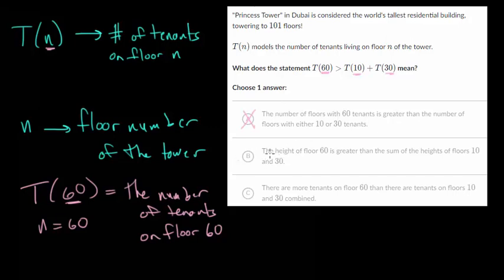Now B talks about the height of floor 60. But this problem and these letters don't represent the height. So we can immediately ignore this because they're talking about the height rather than which floor they're on or the number of tenants.